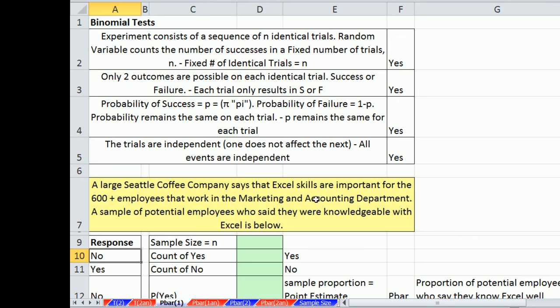And you can imagine that this is a question on some document that they're submitting as a potential employee, right? Because they want to know if you're going to work in the marketing and you better be good with Excel. And this would probably be a first step. Then once you say yes, maybe you get an interview or a test. All right, so yes, there's a success or failure on each trial. Probability of success, yeah, you can either get a yes or a no, so that's the same each time. The trials are independent, so each potential employee is not affecting the next. So all the tests are met.